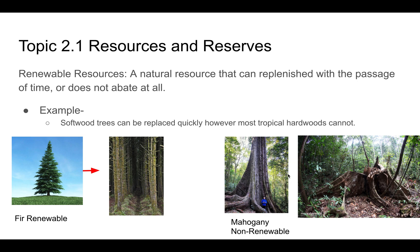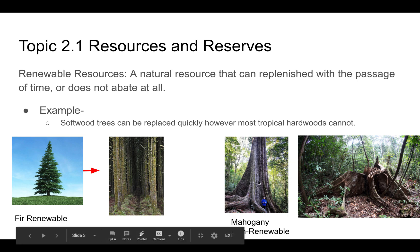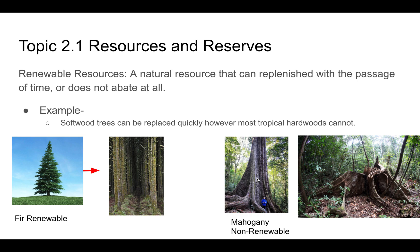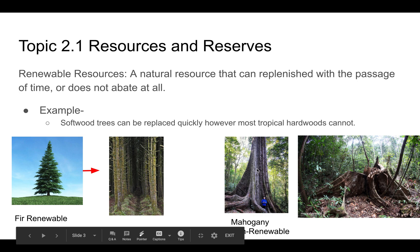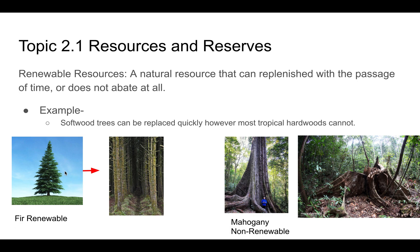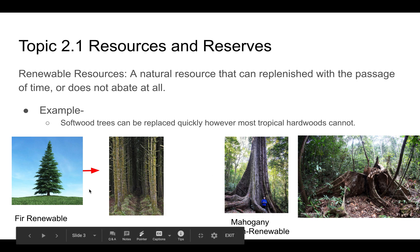Whereas some hardwoods — like mahogany — are a really beautiful wood but a very slow-growing tree. Once you cut down a mahogany tree, it's difficult for it to regrow in any reasonable amount of time; it takes hundreds of years to grow to a large size. Whereas a fir tree will take just a couple of decades to grow to something you can harvest. So fir is renewable, and mahogany would be non-renewable.